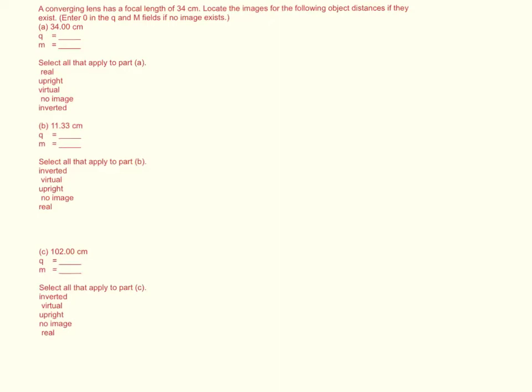So we have the focal length, 34 cm, and it wants us to locate the images. It wants us to locate Q and M given P. So it gives us P of a bunch of different values. And so all we've got to do is find an equation that works and plug and chug for P every time.